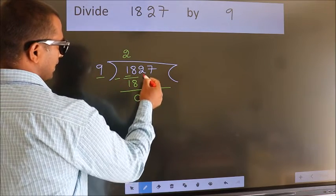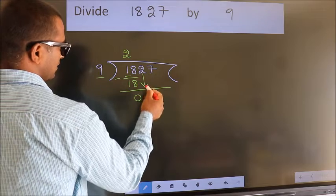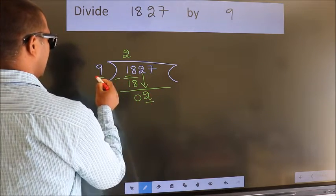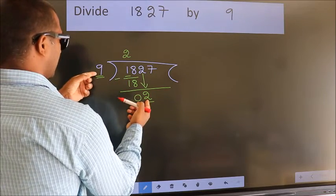After this, bring down the beside number. So 2 down. Here we have 2. Here 9. 2 is smaller than 9.